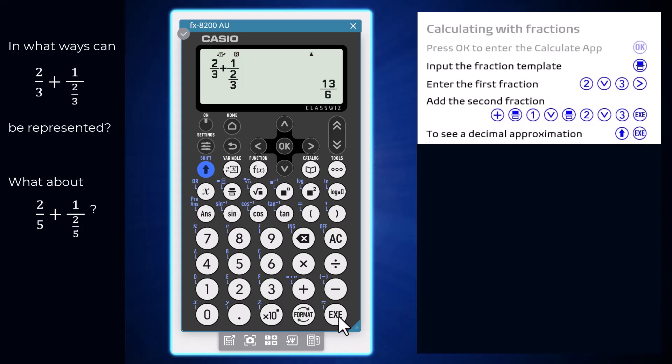To see a decimal approximation of this value, press the Shift key and the Execute key. This approximately equals key combination can be used any time a decimal approximation is required instead of an exact value.